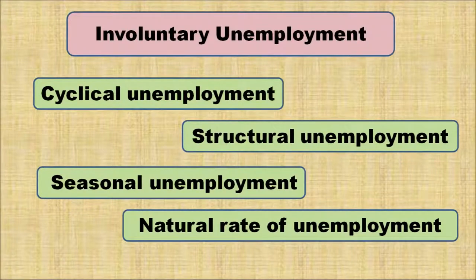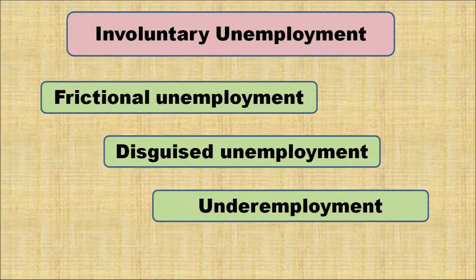As the government and as economists, we have to think about those who are involuntarily unemployed and make policies accordingly. The different types of involuntary unemployment may be categorized into: cyclical unemployment, structural unemployment, seasonal unemployment, natural rate of unemployment, frictional unemployment, disguised unemployment, and underemployment. Let us discuss these types one by one for better clarity.